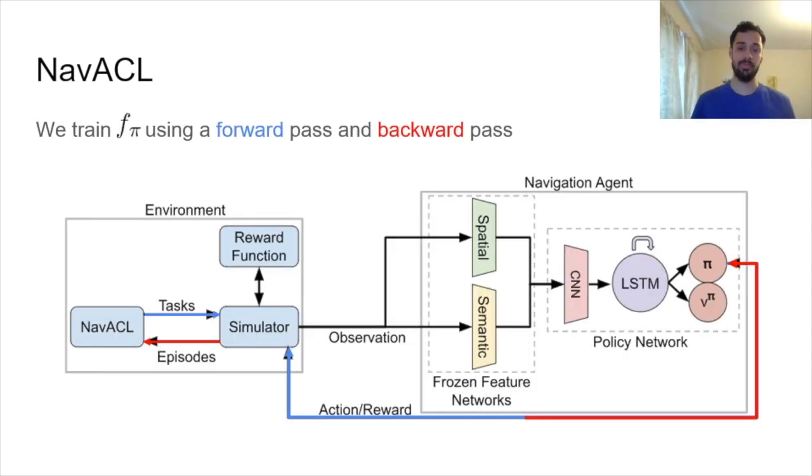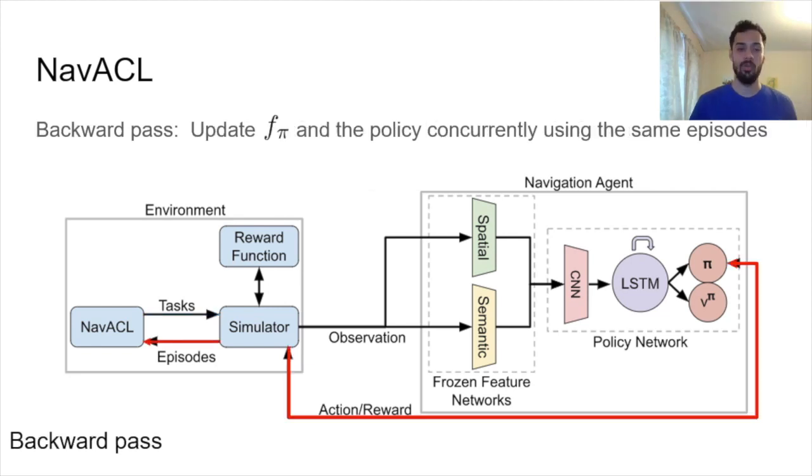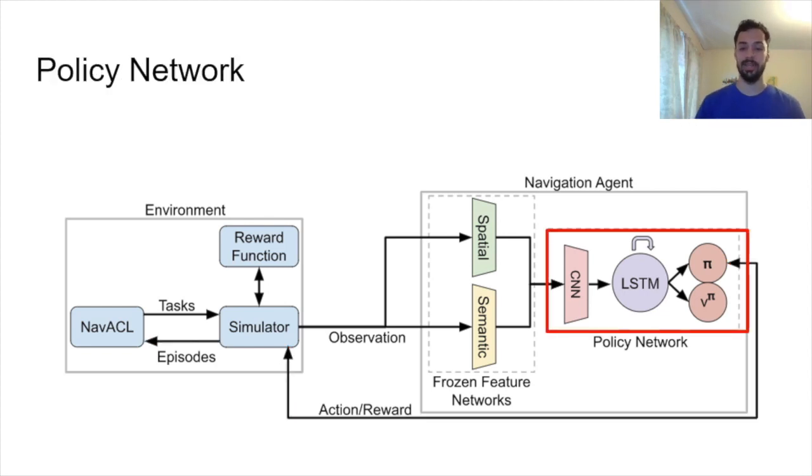We train f_π, our task success probability estimator using a forward pass in blue and a backwards pass in red. During the forward pass, we simply sample tasks from f_π and we play them out, creating episodes or rollouts. Once you've collected enough episodes, we can do a backwards pass. First, we follow what any reinforcement learning algorithm would do. We do gradient descent on our episodes and update our policy network. However, we can use these same exact episodes that we've just used to update our policy network to update NAVACL. So we can basically update NAVACL for free. There's very little overhead in doing this update. We don't have to do any extra episodes or anything of that sort.